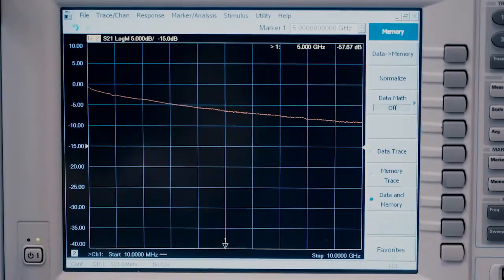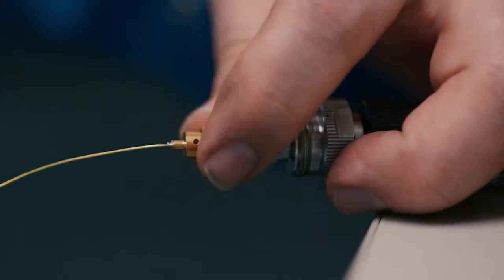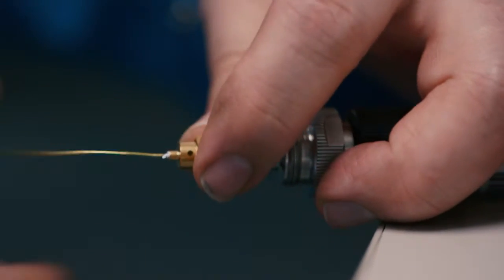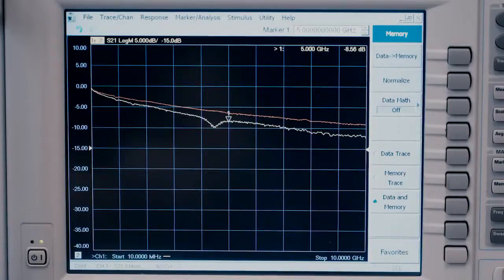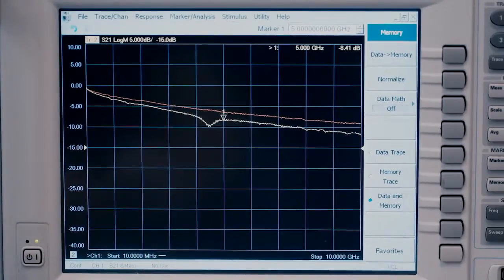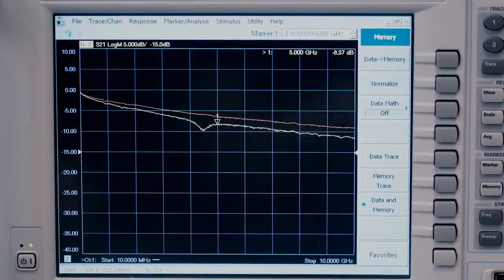So first cable I have on here, very small, 17 thousandths in diameter, zero to 15 gigahertz on the VNA, put a marker at 5 gigahertz, we're about minus 8.3 dBs.